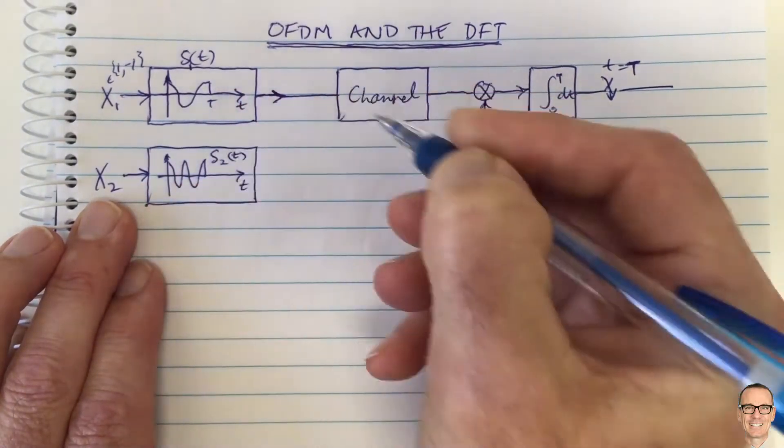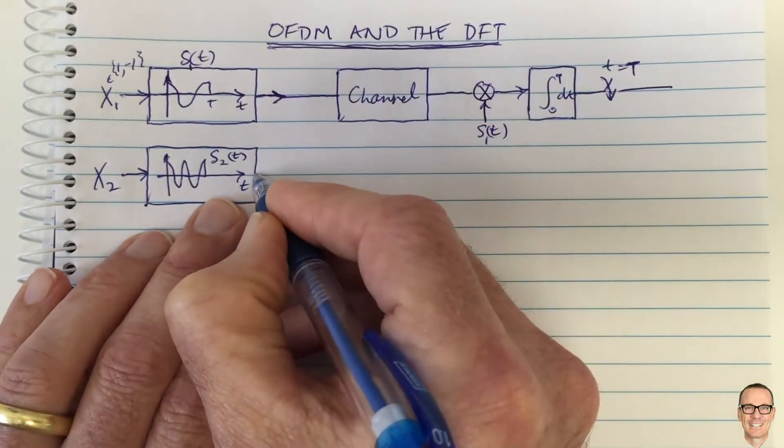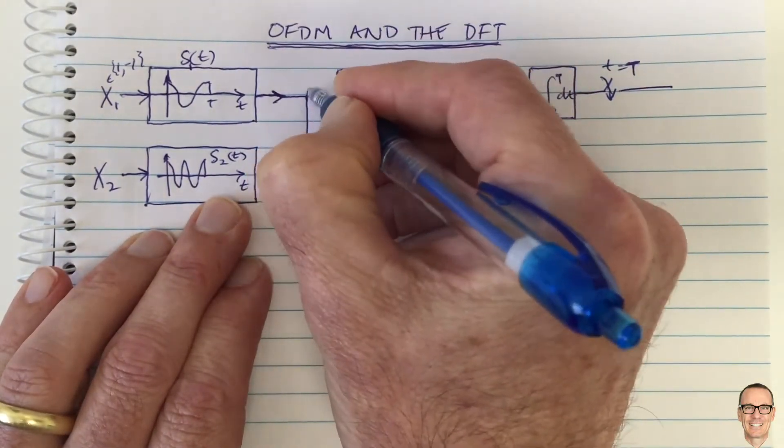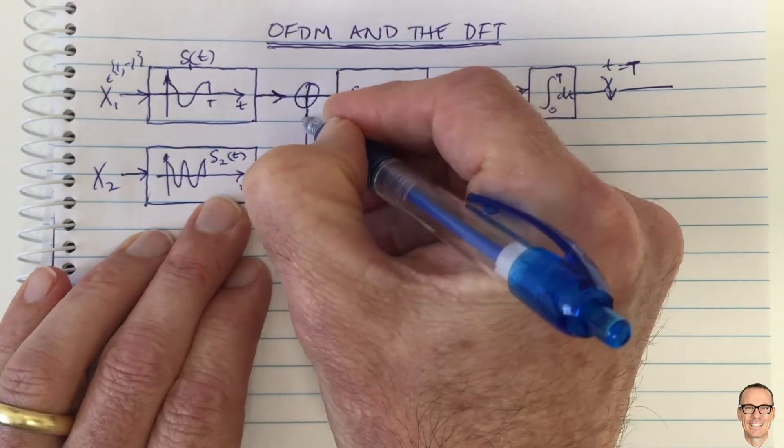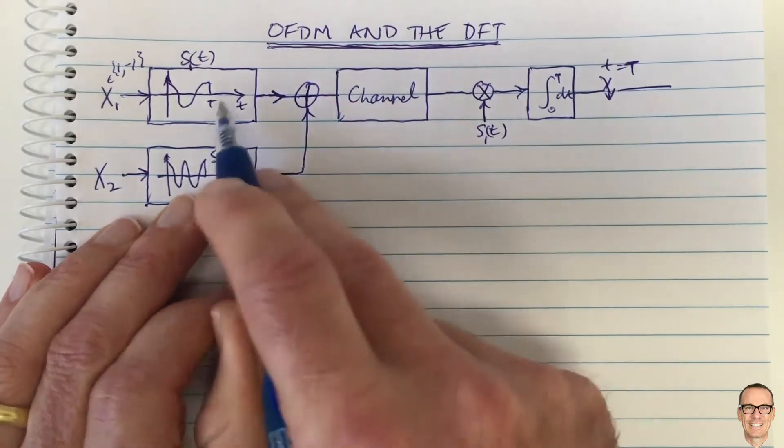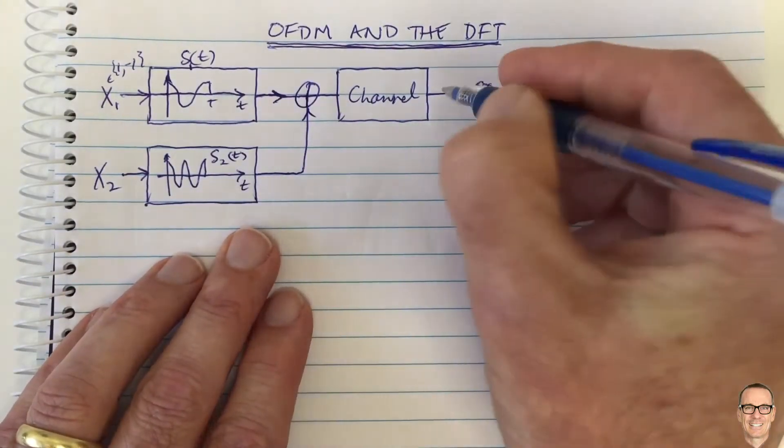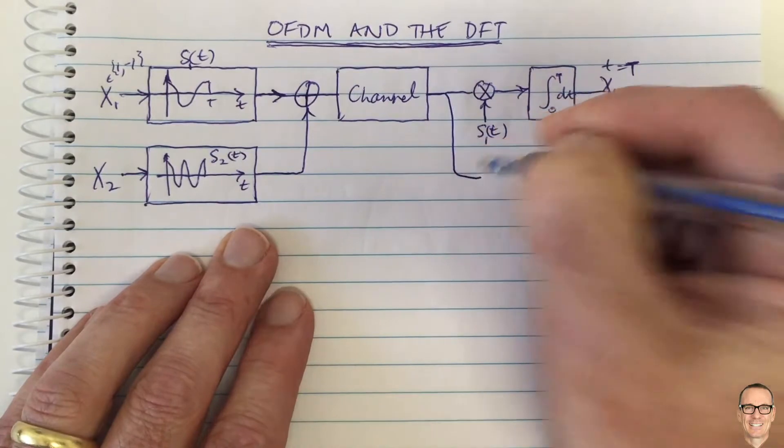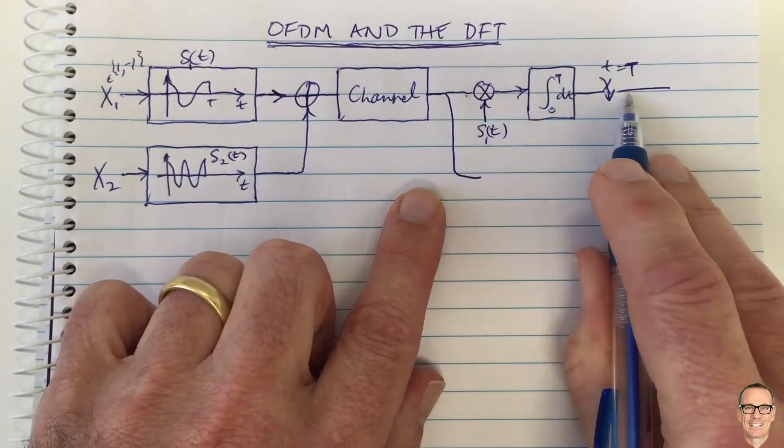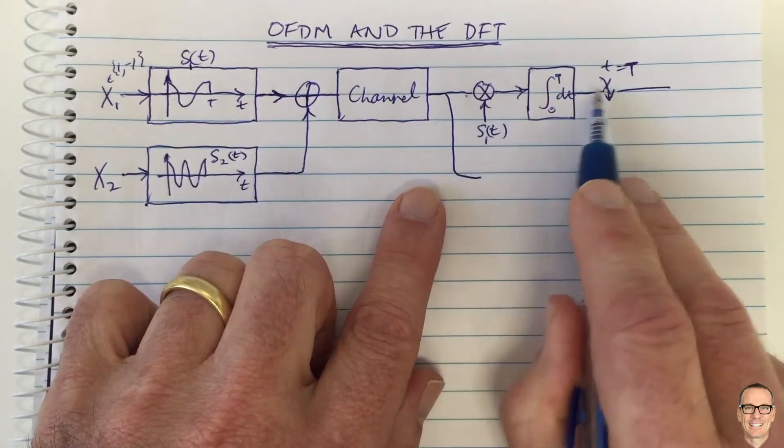It's going to go into this channel, added to the first signal. We add them together and send them over the same channel. Then at the receiver, we need to put the signal into this sequence here, this circuit tree here.